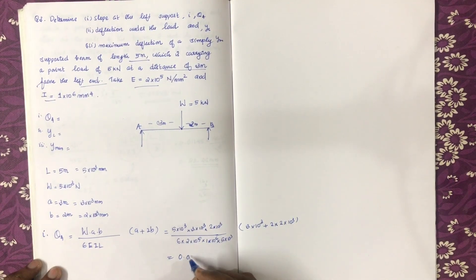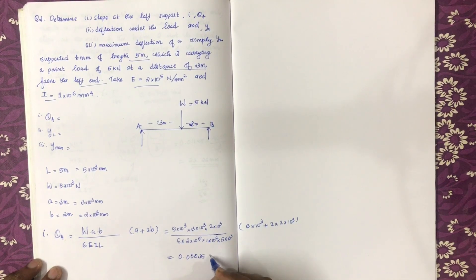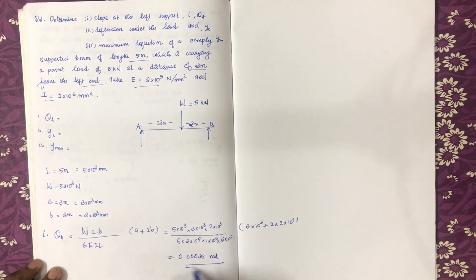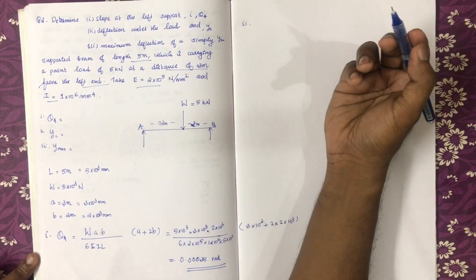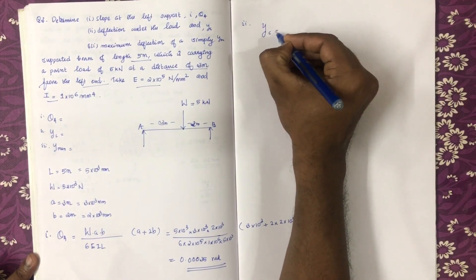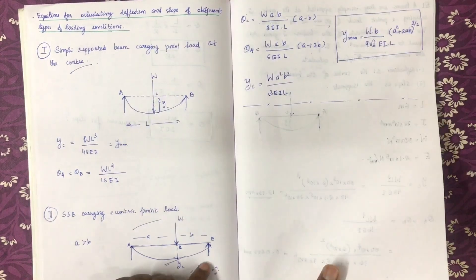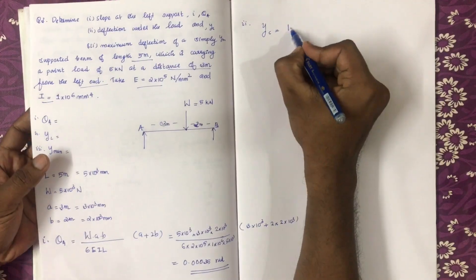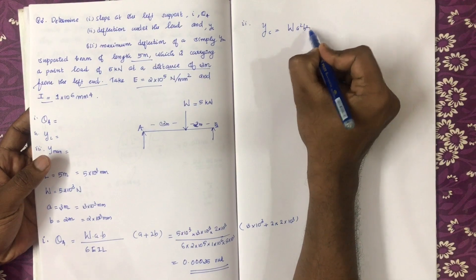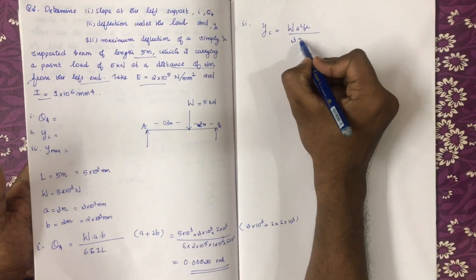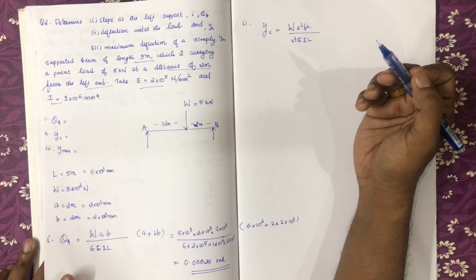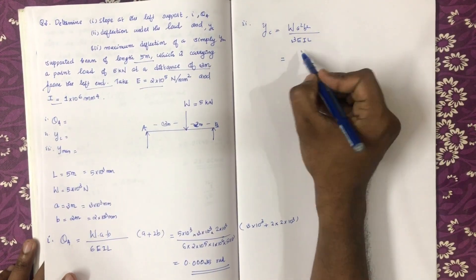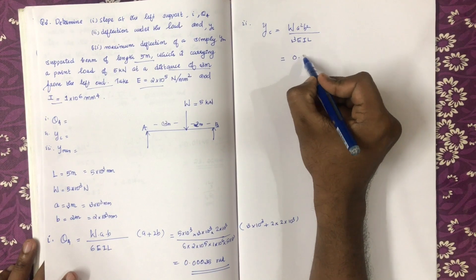Substituting all values, we get theta A equals 0.0003035 radians. Now for YC: YC equals W·a²·b² divided by 3EI·L. Substituting E value, we get approximately 0.61 mm.